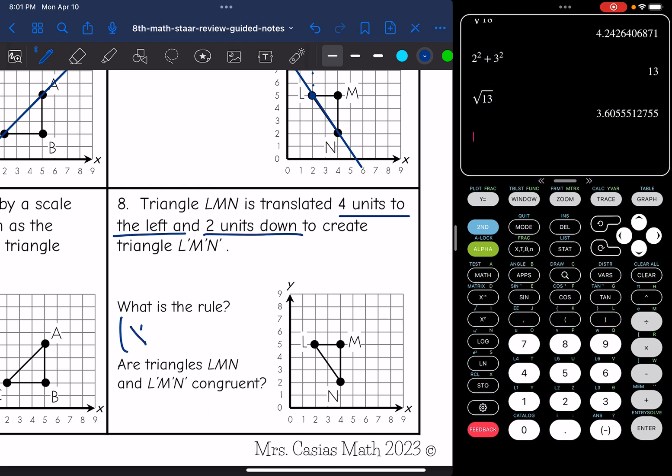4 units to the left, that's affecting the x-coordinate, and I would subtract 4 to move it left. And then 2 units down, that's affecting the y-coordinate, and I would subtract 2 to move the coordinate down. Are the triangles congruent? Yes, because translations just slide your figure. They do not change the size at all.